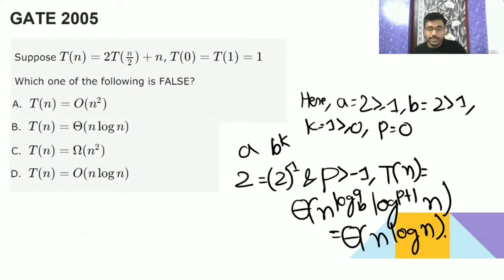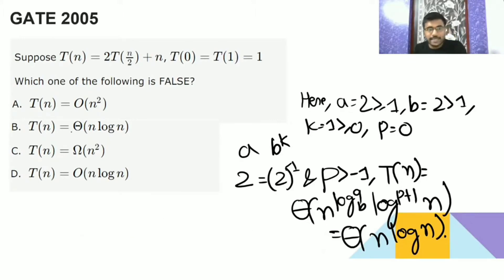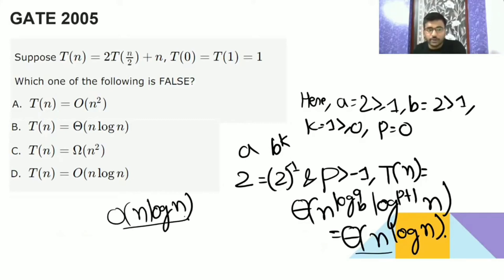So Θ is going to be n log n. Since it is Θ(n log n), you can also say it is big O of n log n — so that is true. And since n log n is O(n²), you can even say it is O(n²), because n log n is less than n², so that is also true.